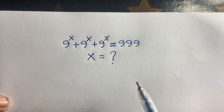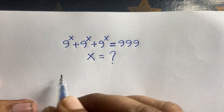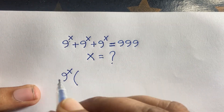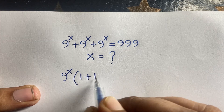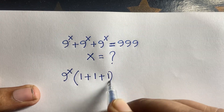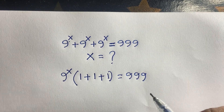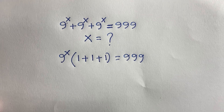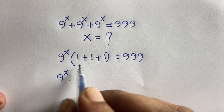To solve this, first I note that 9^x is common. Factoring it out: dividing each term gives 1 + 1 + 1, so the equation becomes 9^x times (1 + 1 + 1) = 999.